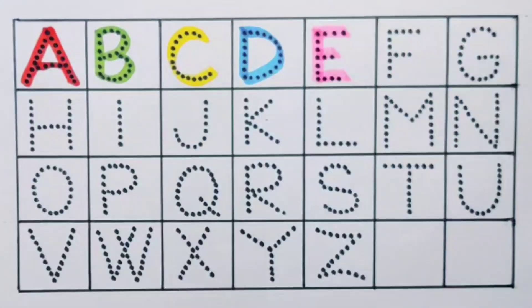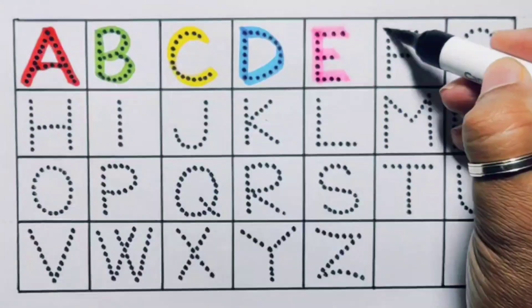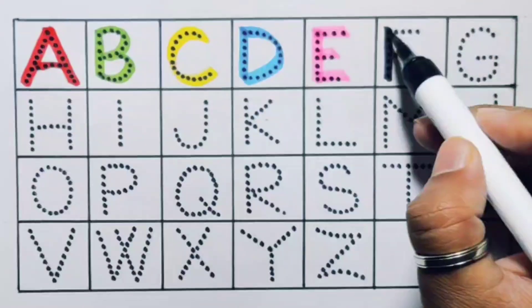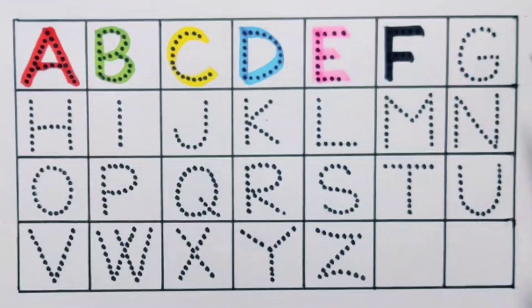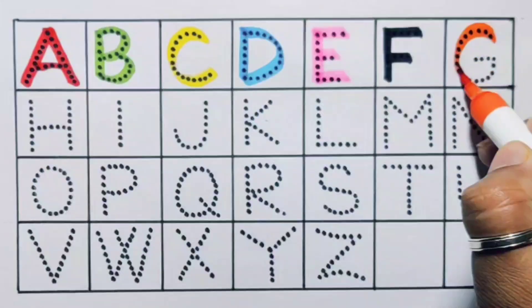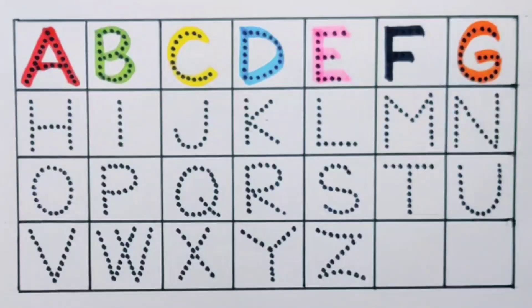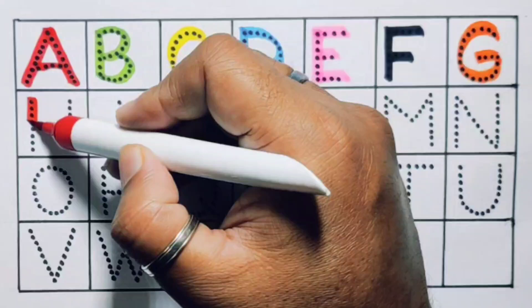Next, F, F for flower. Next, G, G for guitar. Next, H, H for helicopter.